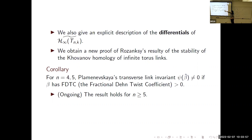For anyone who knows the Plamenevskaya transverse link invariant: we can show that for braids on four strands and five strands, the Plamenevskaya transverse link invariant is not equal to zero if the braid has fractional Dehn twist coefficient greater than zero. We have the result written down for four and five strands, and there's no reason it shouldn't work for all numbers of strands.